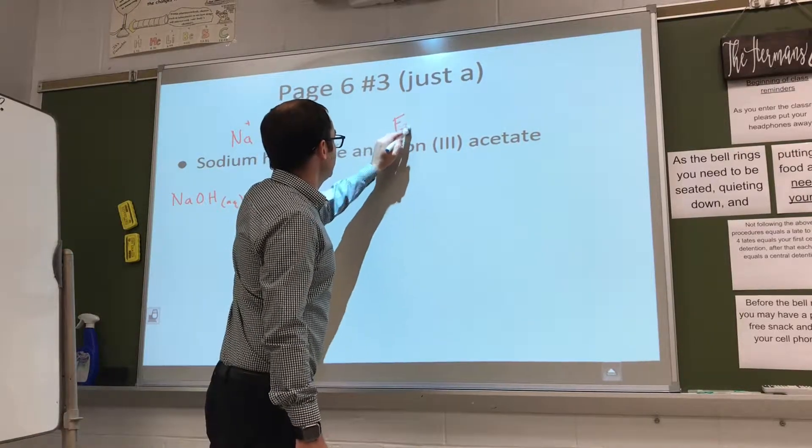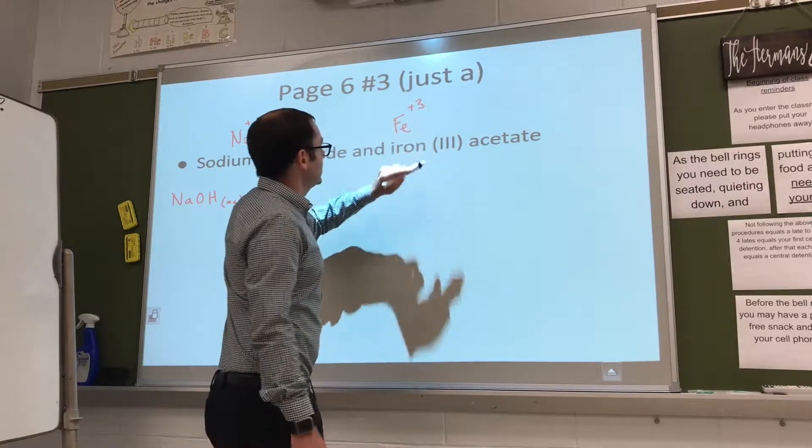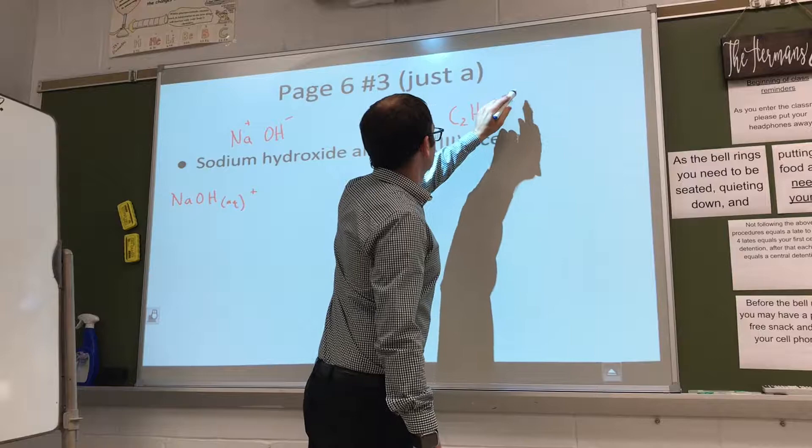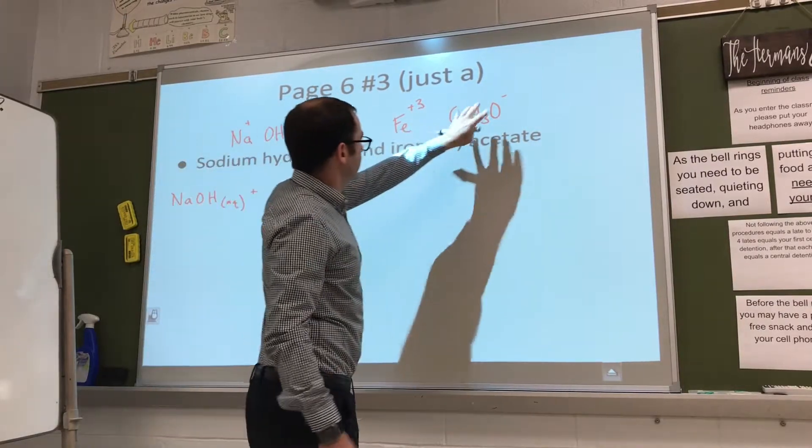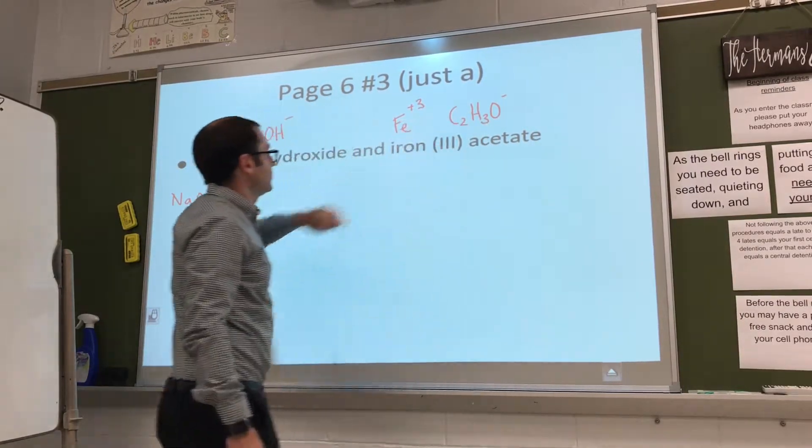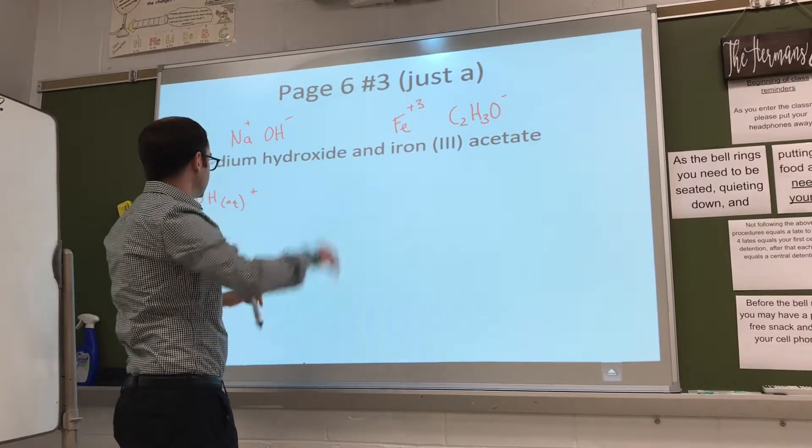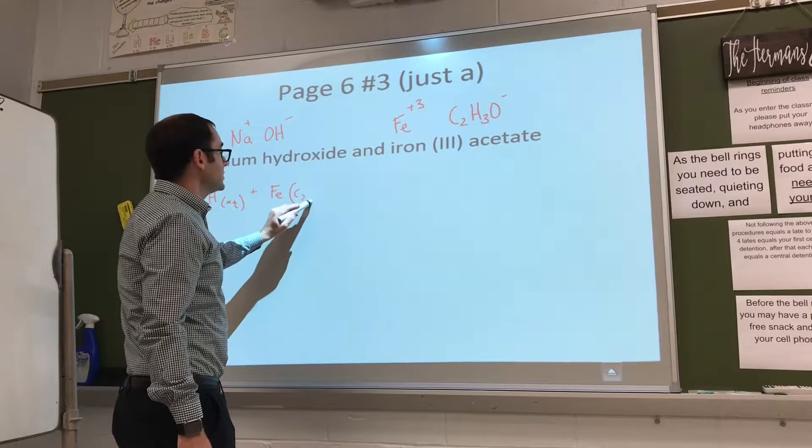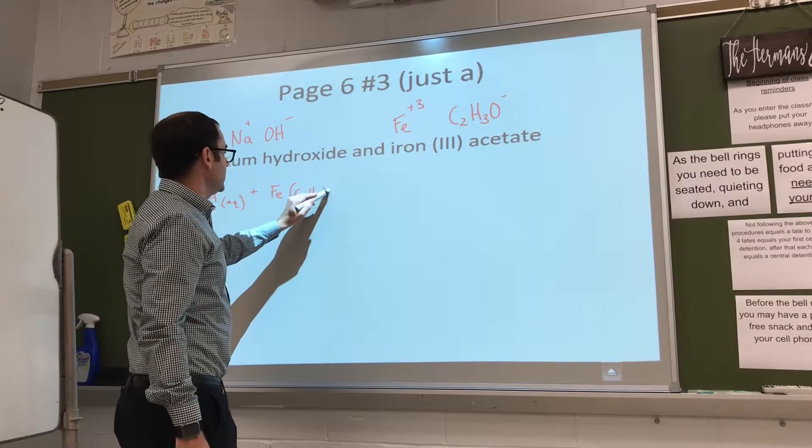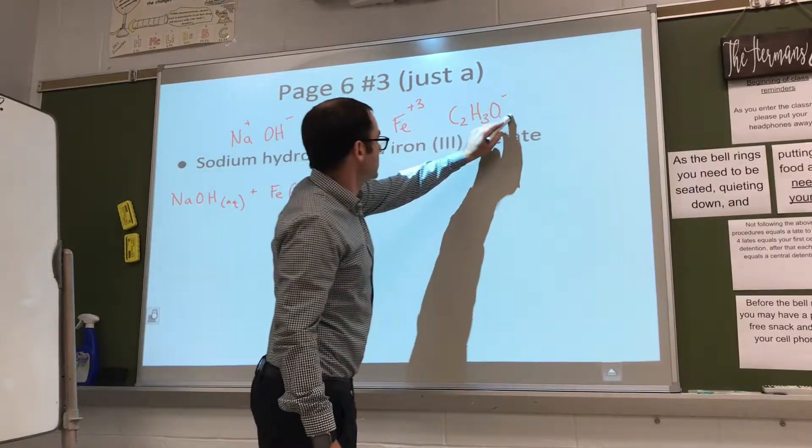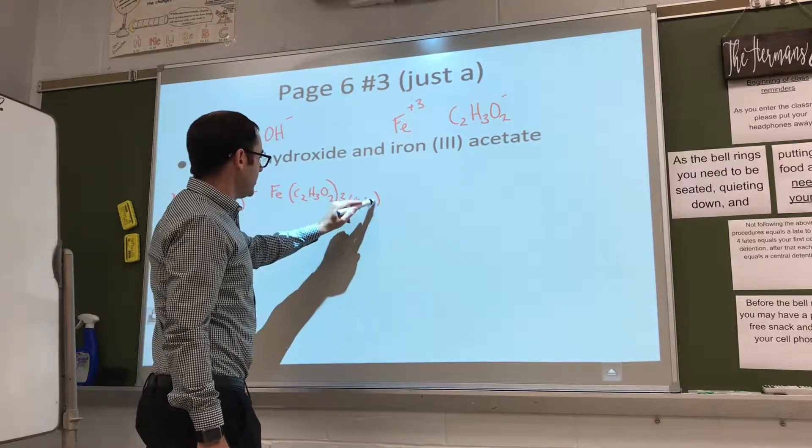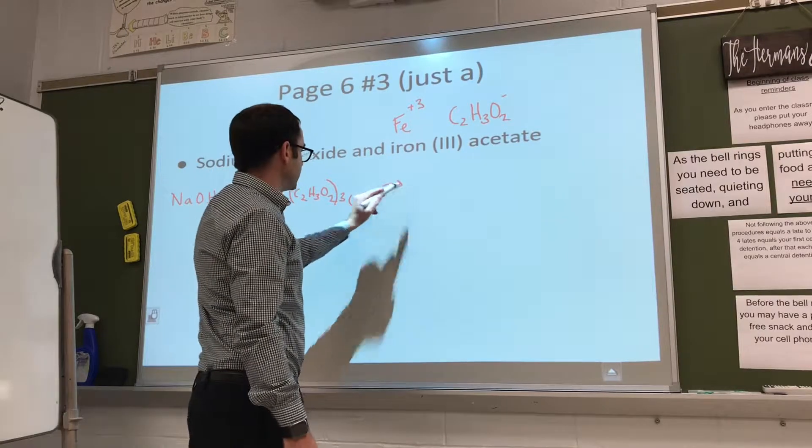So Fe plus three and acetate that's minus one. For this one we need three acetates for one of those Fe's to balance out the charge. So we'll have Fe(C2H3O2)3, and we'll have three of them. And hopefully if you check the chart that should be aqueous as well.